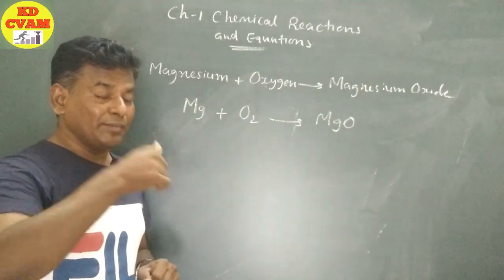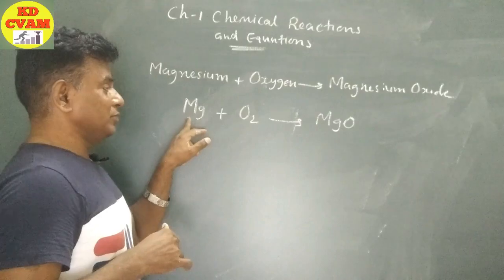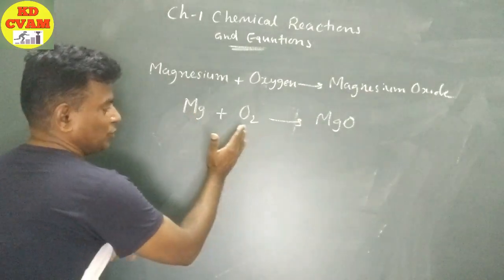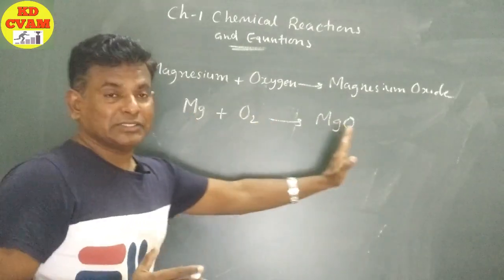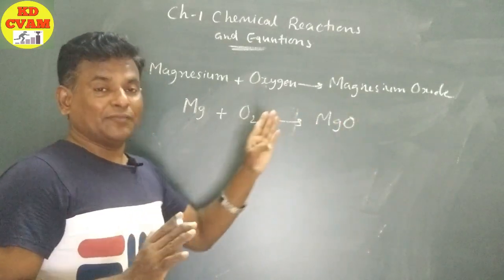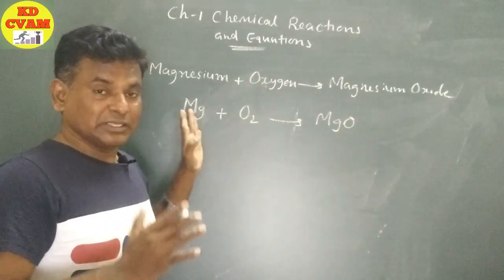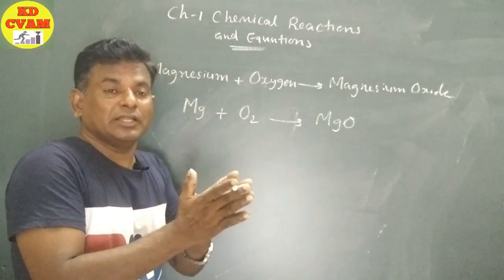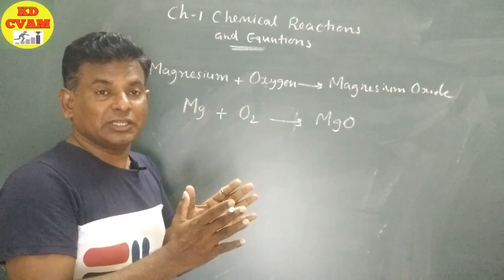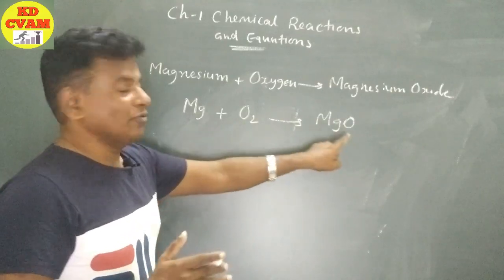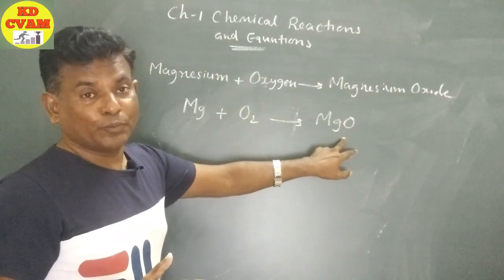But if we look at this, there is no balance. If we look at Mg here, Mg is 1 on the left hand side. Left hand side means reactants, right hand side means products. Reactants mix together and give the product. So this is the reactants side and this is the product.